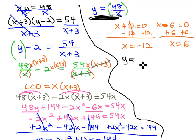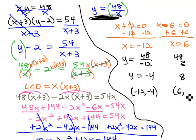So we can still find y by taking forty-eight over negative twelve, which gives us y equals negative four. So when x is negative twelve, y is negative four. Or we can take forty-eight over six, which gives us eight. So when x is six, y is eight.